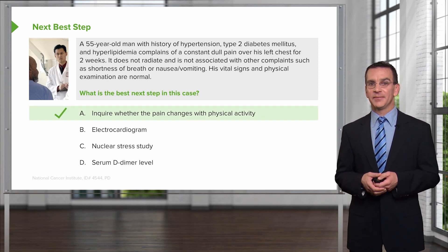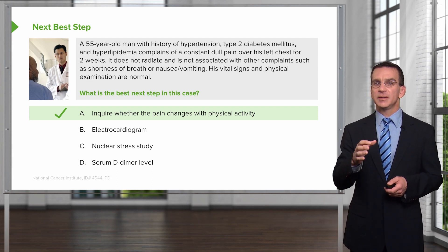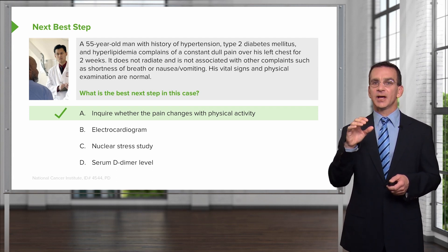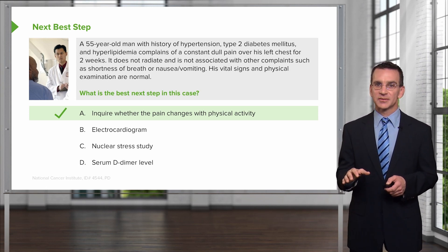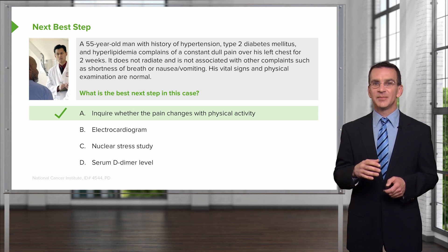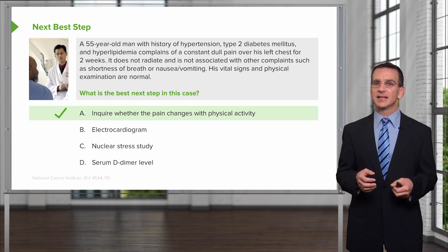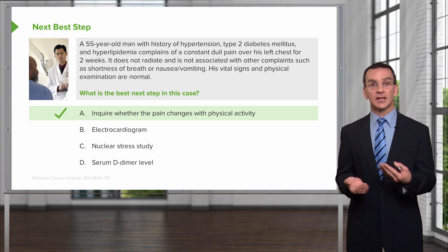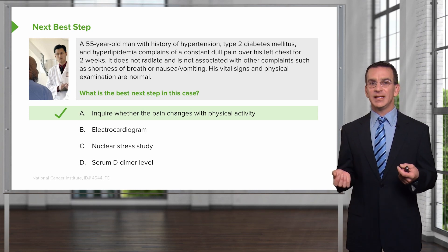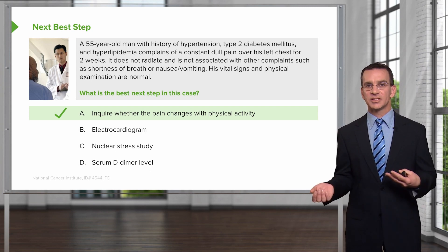The answer is A. We have a man with all the major cardiovascular risk factors, but it's a constant dull pain for two weeks. That doesn't tell me this is necessarily angina, which should come and go. The critical issue is: does it come and go and get worse with exercise? That's why the answer is A. It also doesn't radiate, and it's not associated with complaints you might see with angina, like shortness of breath, nausea, or vomiting.